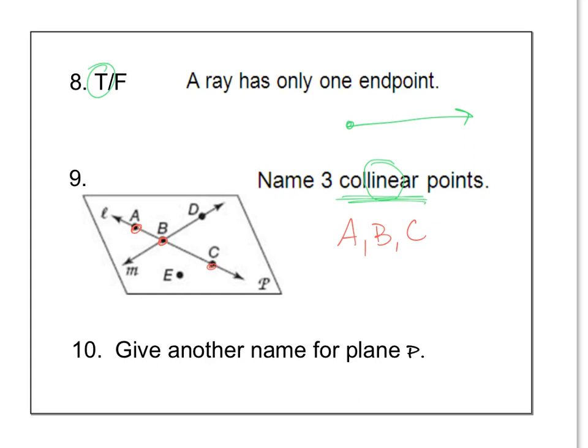Number 10, give another name for plane p. So when you name a plane, you can use the cursive letter down in the corner, or you can pick three non-collinear points. They cannot be in a straight line. So I could call this plane, and then maybe I would go a, b, d, for instance, because a, b, and d are not all in a straight line. But those three points are on the flat surface. You could have also used other combinations, like plane, a, c, e. Any three points, you only pick three. And you can't pick less than three. You have to pick exactly three points to name your plane.